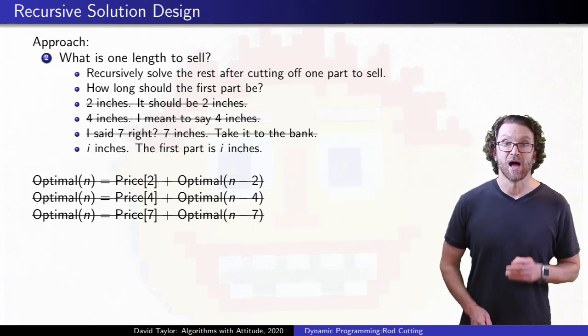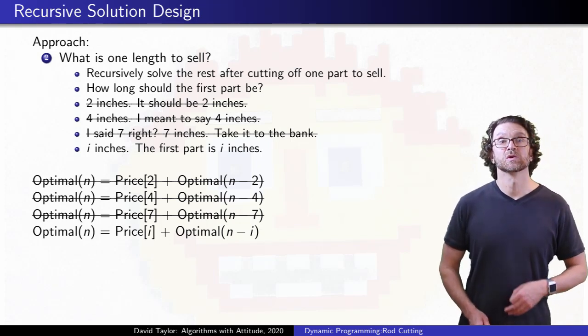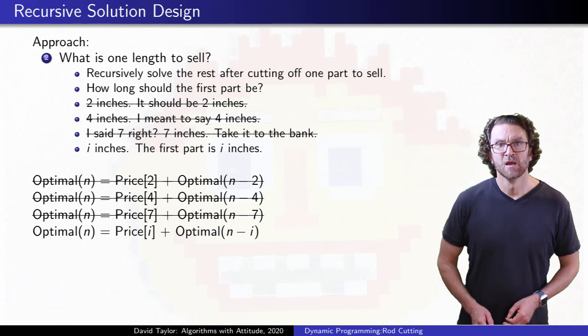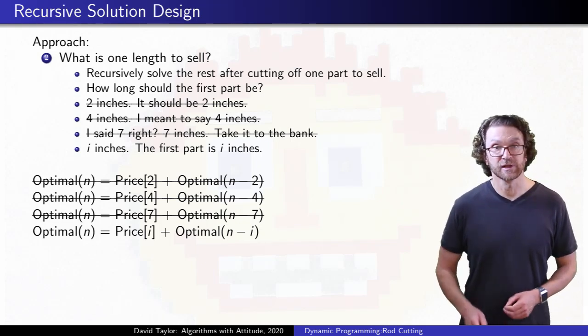That leaves you with a length i rod to sell, and a remaining length n-i rod to recursively solve. So how do we figure out i without the help of our flaky friend?